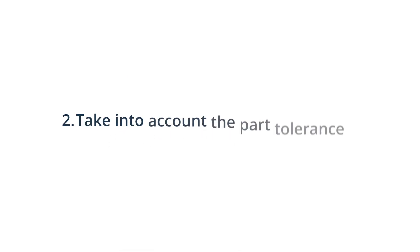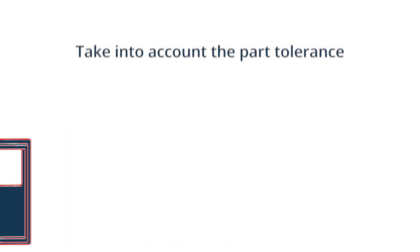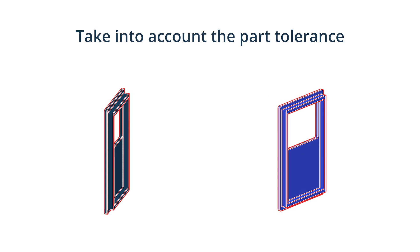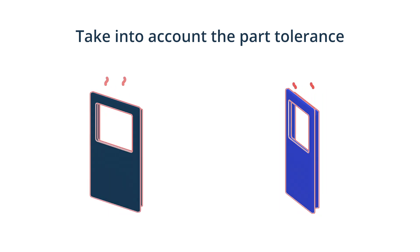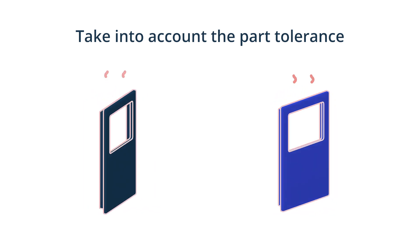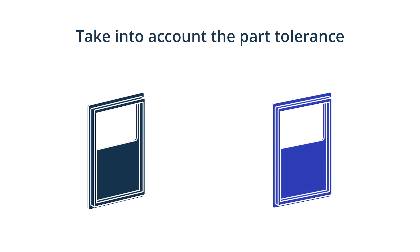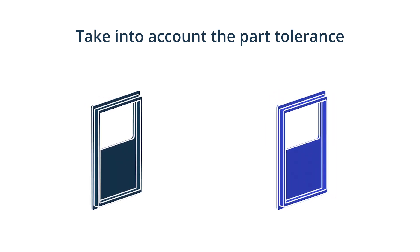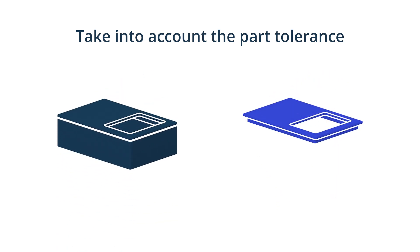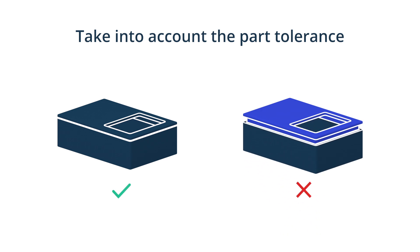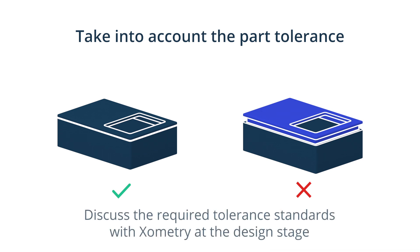Tip 2: Take into account the part tolerance. Tolerances are affected by the shrinkage that occurs during the cooling process. Amorphous materials, like PLA, generally have tighter tolerances than semi-crystalline materials like PEEK. Tight tolerances make production more expensive, but they may be necessary for your part to fit or function properly, especially if it is used in an assembly. We recommend contacting your supplier at the design stage to discuss the tolerance standards that they use.